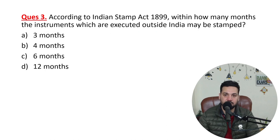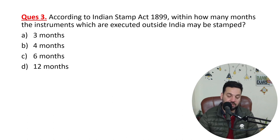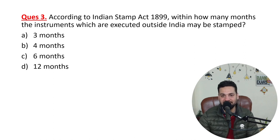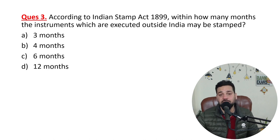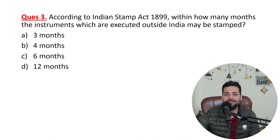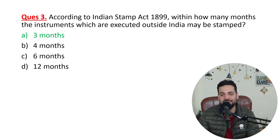You might already know this if you work in a bank, but the time limit you are supposed to know: within how many months must documents executed outside India be stamped? Within 3 months. There is a slight confusion between registration and stamping — please remember, for stamping it is within 3 months.